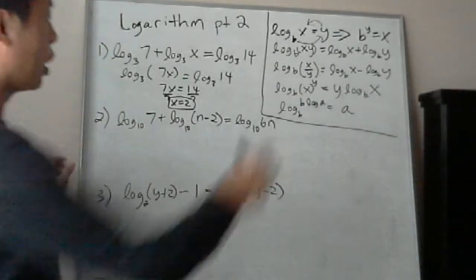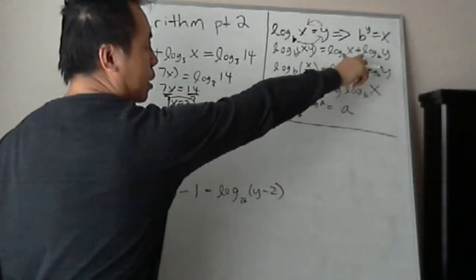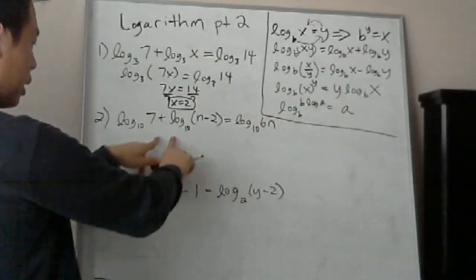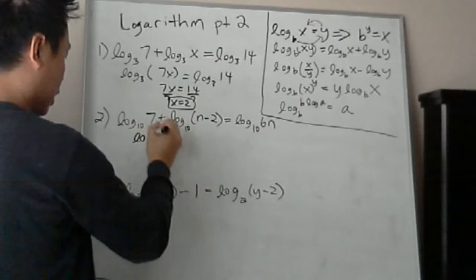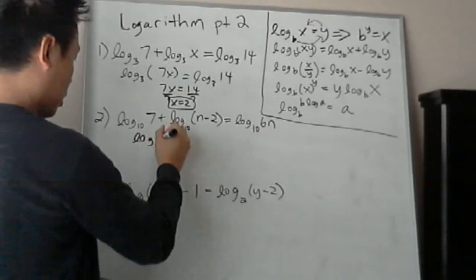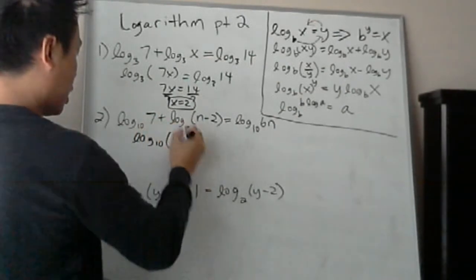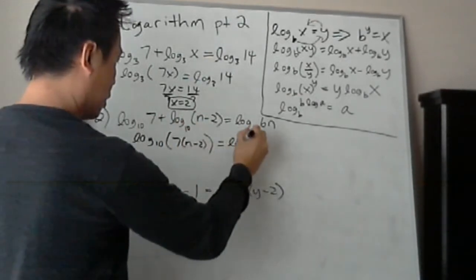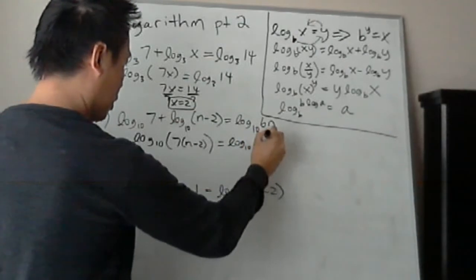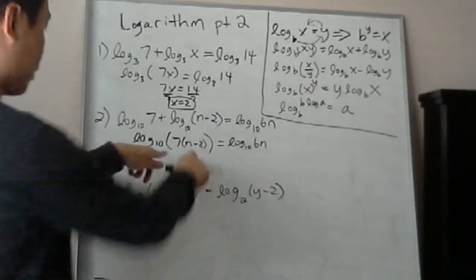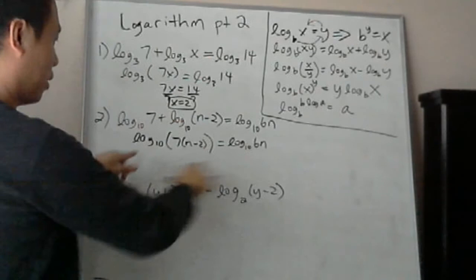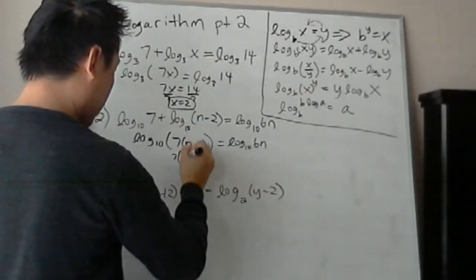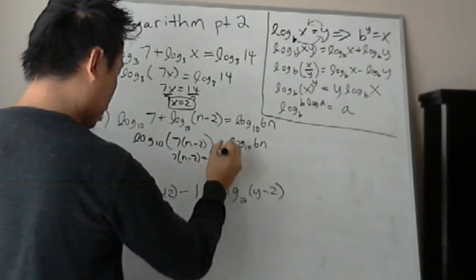So what do you do? So you have log base b x plus log base b y, right? Is equal to log base b x times y, so it's the same thing. You see that? So that equals to log base 10, 7 times n minus 2. See how that works? You just multiply it. This is your property now. So now the base is the same. Now you can set these equal.